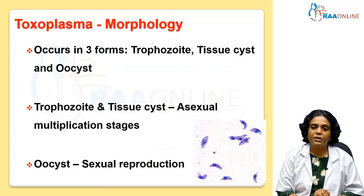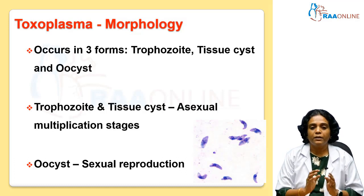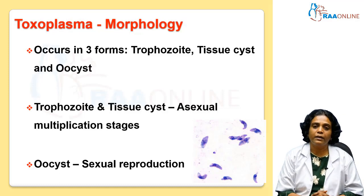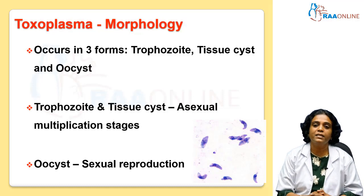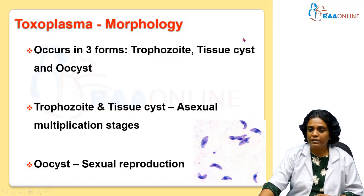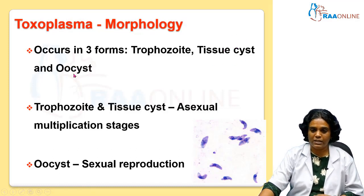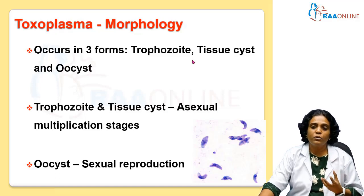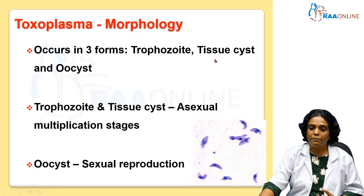Coming to the morphology of Toxoplasma, it usually occurs in three forms. One is the trophozoite, also called the tachyzoite — the actively multiplying forms of the parasite. Then we have the tissue cyst, which is usually present in the chronic stage. And then we have the oocyst. All three forms will be present in the feline host, as feline hosts are the definitive hosts.